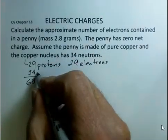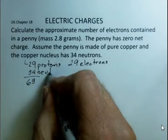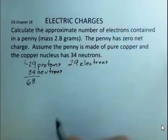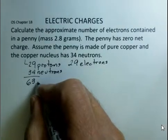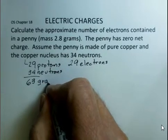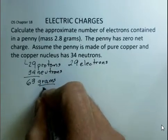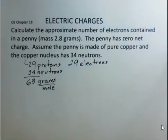29 protons, 34 neutrons. An atomic mass number of 63. And this, pretty close, means that there are 63 grams per mole. That's going to be our conversion factor.